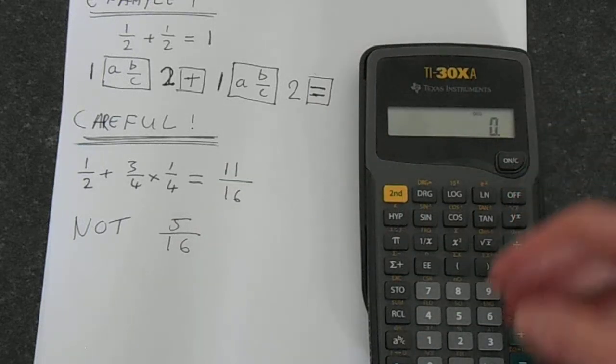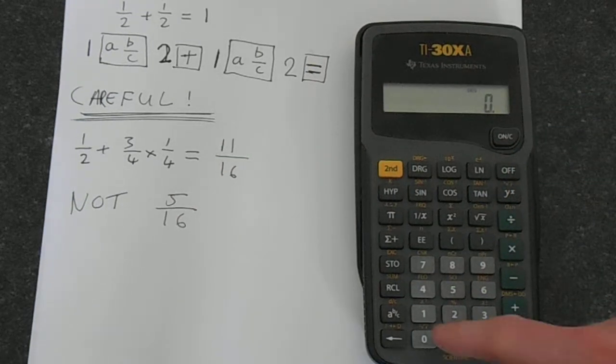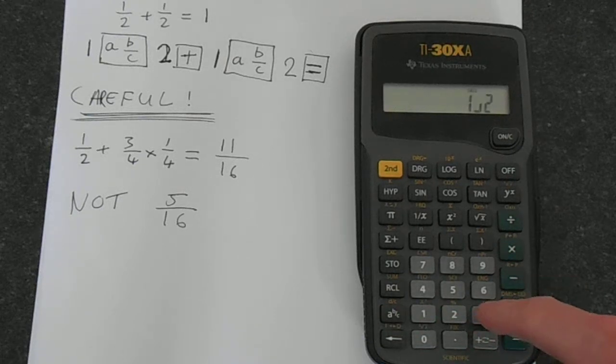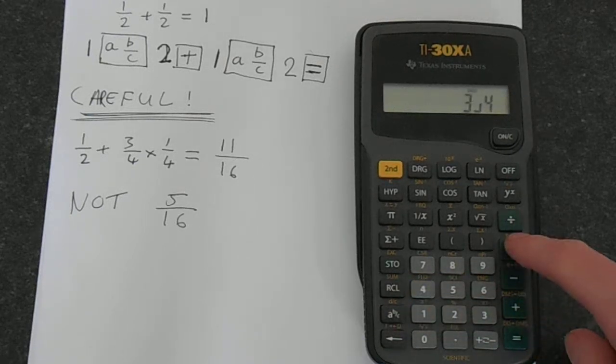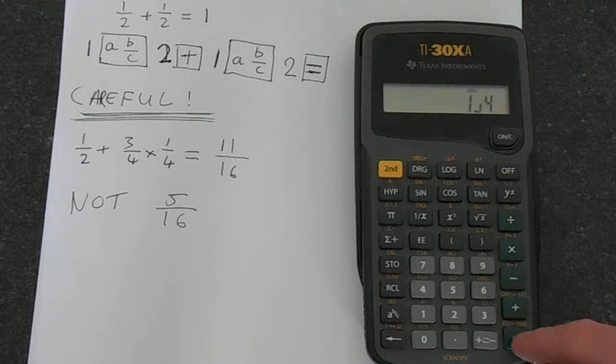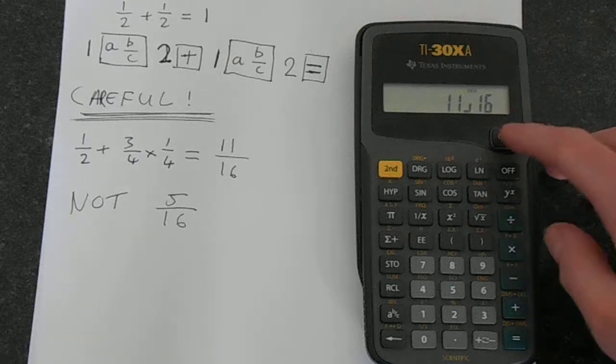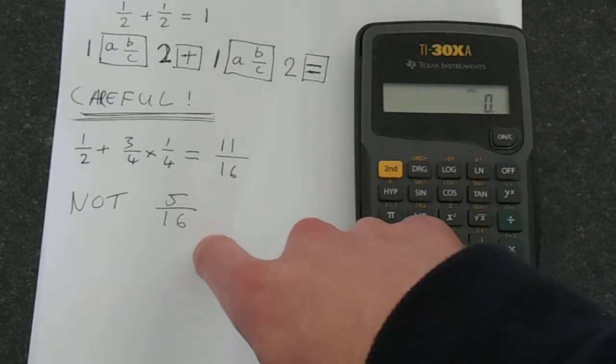You do it in the calculator. The calculator knows this. It's somewhat clever in that respect. So a half plus 3 over 4 times 1 over 4 equals 11 over 16. So that does it correctly. It should not be 5 over 16.